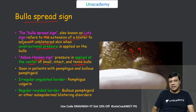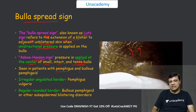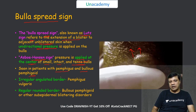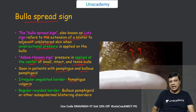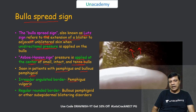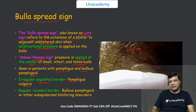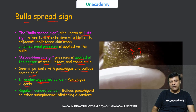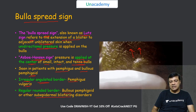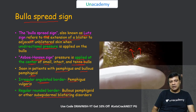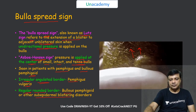The bulla spread sign can be seen in pemphigus vulgaris as well as bullous pemphigoid. In pemphigus vulgaris the extension will be irregular and angulated, while in bullous pemphigoid and various sub-epidermal blistering diseases the extension of the blister will be round and regular.